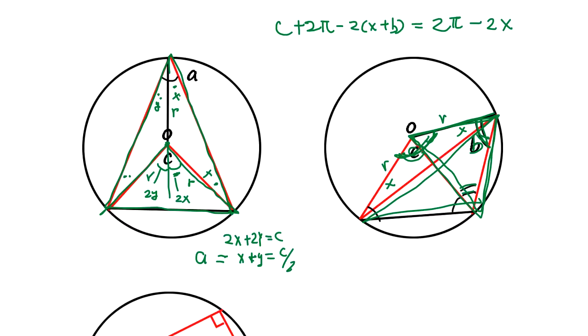Plus C is going to be this one. So it will be 2π minus 2X. So we eliminate this C plus 2X minus 2B equals minus 2X. This is minus. So 2X disappears here. So C equals 2B.